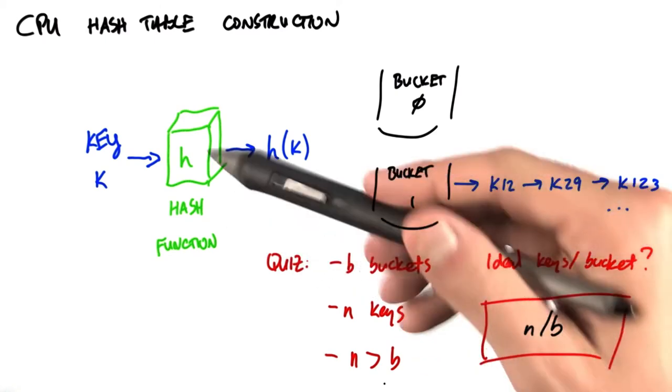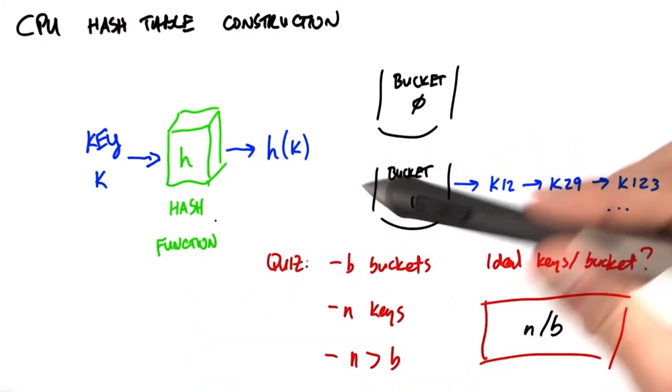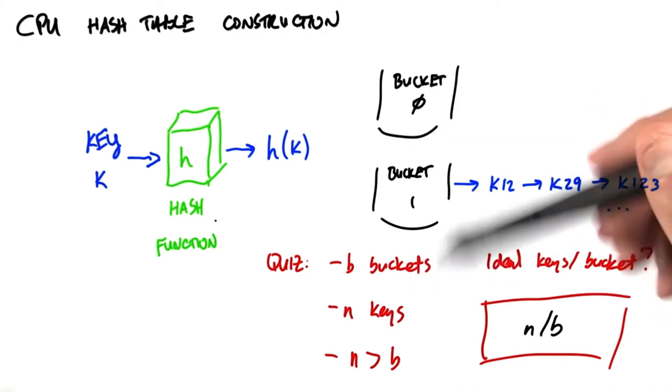So this is largely a function of the hash function. Did we do a good job choosing a hash function that will evenly distribute all the keys among the buckets?